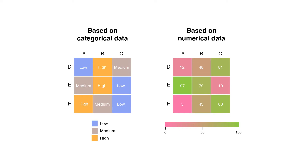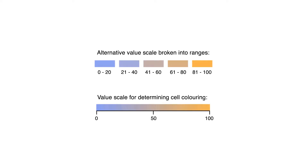A legend is required alongside a heatmap in order for it to be successfully read. Categorical data is color-coded, while numerical data requires a color scale that blends from one color to another in order to represent the differences in high and low values. A selection of solid colors can be used to represent multiple value ranges — for example 0–10, 11–20, 21–30, etc. — or you can use a gradient scale for a single range, for example 0–100, by blending two or more colors together.